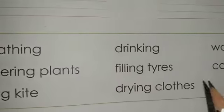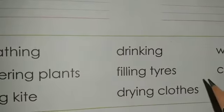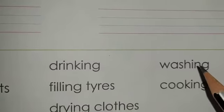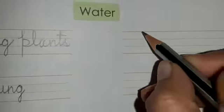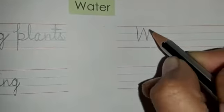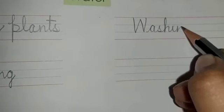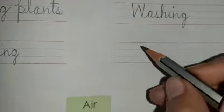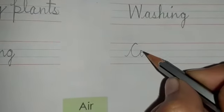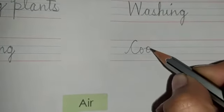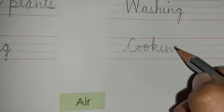Next, what do you see? Filling tires, drying clothes, and washing and cooking. For both washing and cooking, you need water. So we will write down washing — W-A-S-H-I-N-G — and cooking — C-O-O-K-I-N-G.